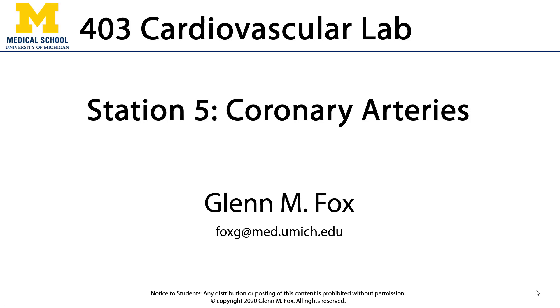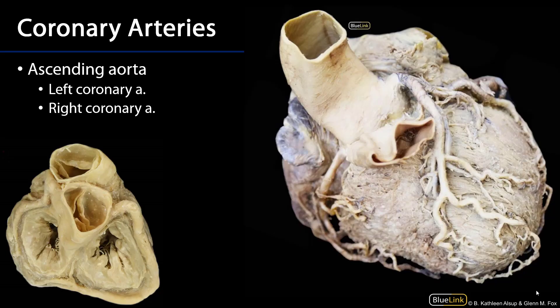Let's talk about the coronary arteries. The coronary arteries and their branches are the direct source of blood to the myocardium of the heart. They are branches of the ascending aorta. There is a left coronary artery, usually referred to as the LCA, and a right coronary artery, usually referred to as the RCA. They take their origins in the aortic sinuses, also known as the sinuses of Valsalva, with the LCA coming from the left sinus and the RCA coming from the right sinus.